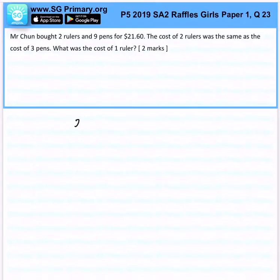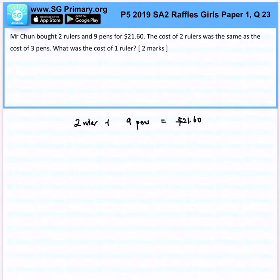Mr. Choon bought 2 rulers and 9 pens for $21.60. The cost of 2 rulers was the same as the cost of 9 pens. What is the cost of a ruler?